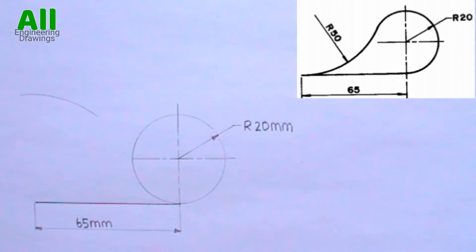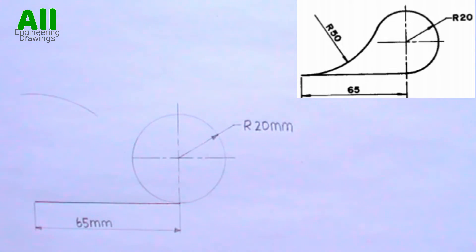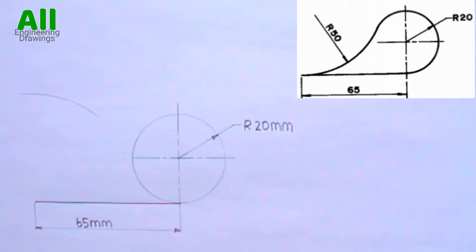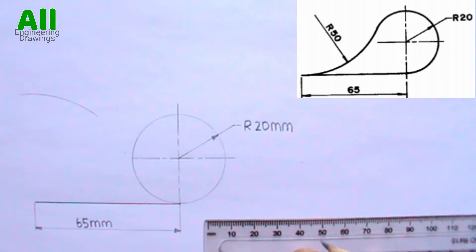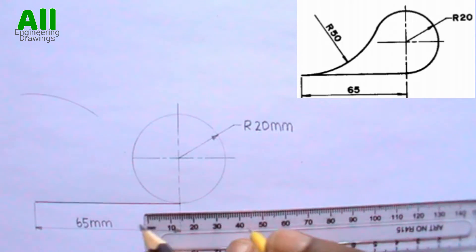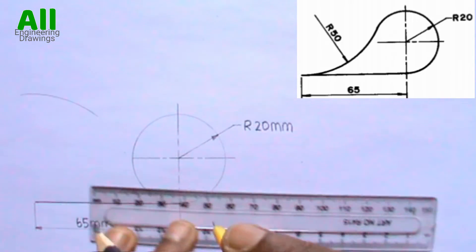Since the arc is to touch the circle externally, you have to add the radius of the arc and the radius of this circle. So that is 50mm plus 20mm, which is 70mm. So you have to take 70mm from your ruler this way.